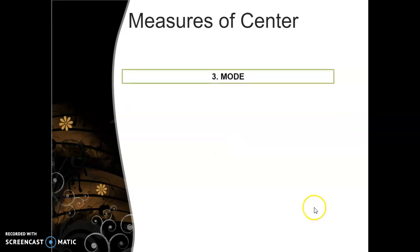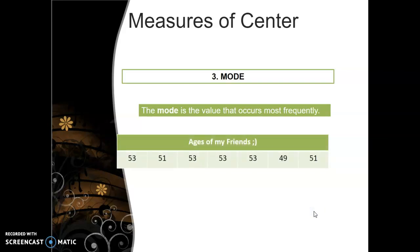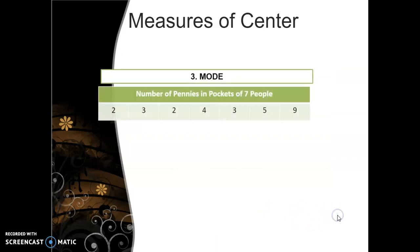Okay, let's discuss mode. The mode is awesome. The mode is just the value that occurs the most frequently. So if you're looking at the ages of my friends, I'm middle-aged. So my friends and I, our ages are 53, 51, 53, 53, 53, 49, I'm not 50 yet, and 51. The most common age here is 53, so that would be called the mode.